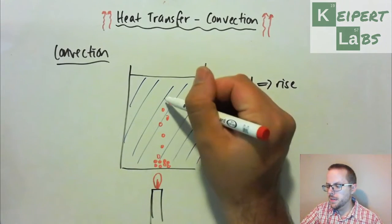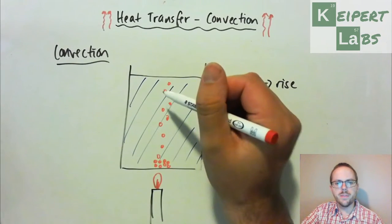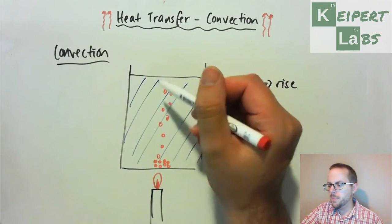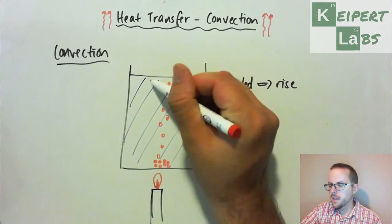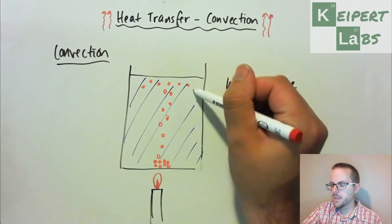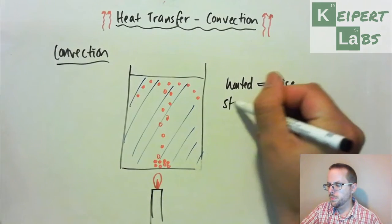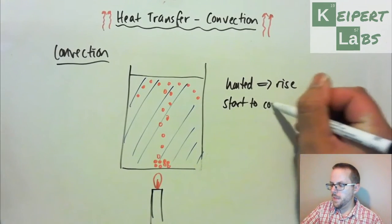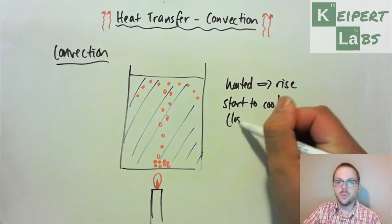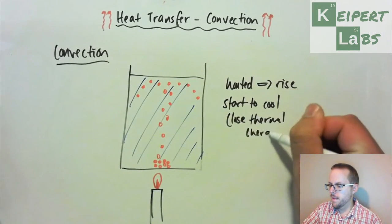What happens is that eventually it reaches towards the top, or it gets further and further away. What happens is that then those water particles, going around down this way, start to cool. That is, when we use the word cool as the opposite of heating, so that is lose thermal energy.